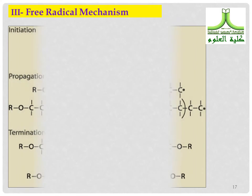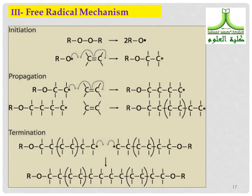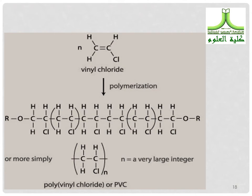The radical mechanism follows three steps: initiation, propagation, and termination. An example is the polymerization of vinyl chloride to produce polyvinyl chloride (PVC).